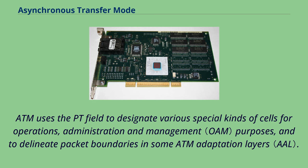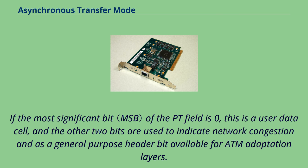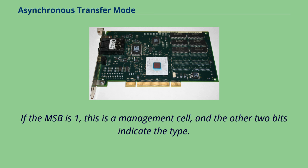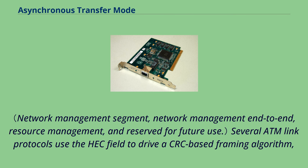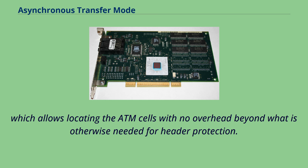If the most significant bit of the PTI field is zero, this is a user data cell, and the other two bits are used to indicate network congestion and as a general-purpose header bit available for ATM adaptation layers. If the MSB is one, this is a management cell, and the other two bits indicate the type. Several ATM link protocols use the HEC field to drive a CRC-based framing algorithm, which allows locating ATM cells with no overhead beyond what is otherwise needed for header protection.